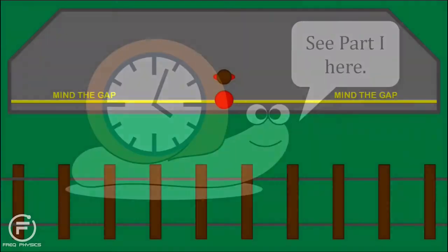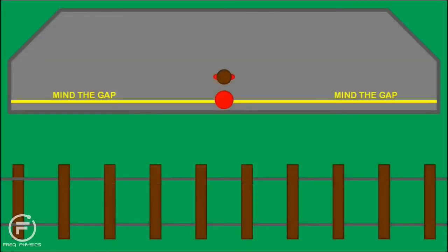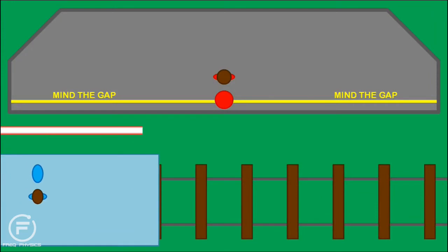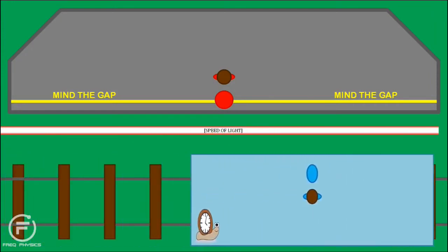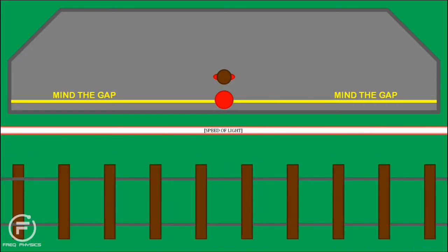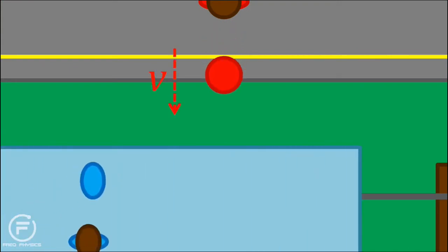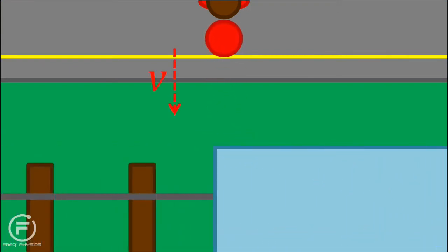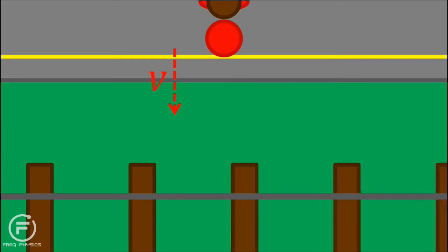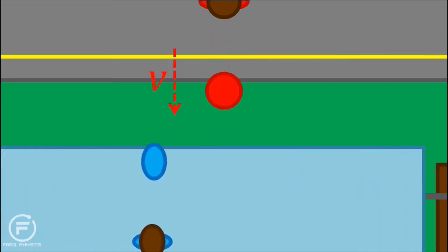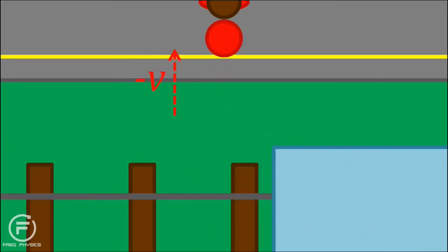Now, imagine another train travelling near the speed of light through a station. Remember that the train gets shorter in the direction that it's moving, and has slower time. A person on the platform throws out a red ball at velocity v towards the train, and someone on the train throws a blue ball in the opposite direction. The two balls collide perfectly elastically in mid-air, meaning that the red ball bounces back towards the platform with velocity minus v.